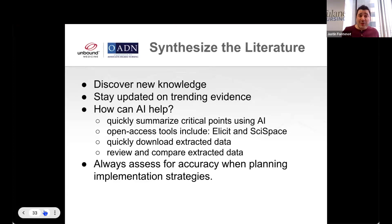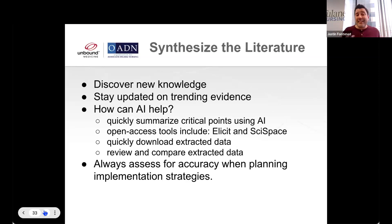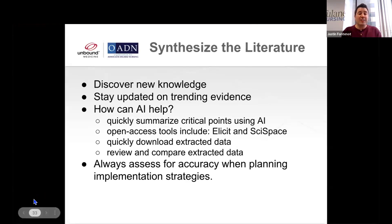Next, you're going to synthesize the literature. That's the hard part because you might start getting 40 or 50 articles on your topic and you just can't read it all. But this is where the magic happens — this is where new ideas come from, new knowledge is built, new publications can happen, and you can keep updated on trending evidence. How can AI help? There are some specific tools that will help you quickly summarize critical points of your collected body of knowledge that you used ChatGPT to help you search for.